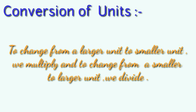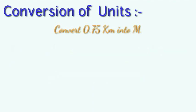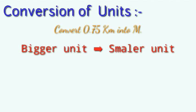First of all, if you want to change from a larger unit to a smaller unit, then you need to multiply. If you want to change from a smaller unit to a larger unit, then you need to divide. For example, 0.75 kilometers — we have to convert it into meters. Since we are going from bigger unit to smaller unit, we have to multiply.